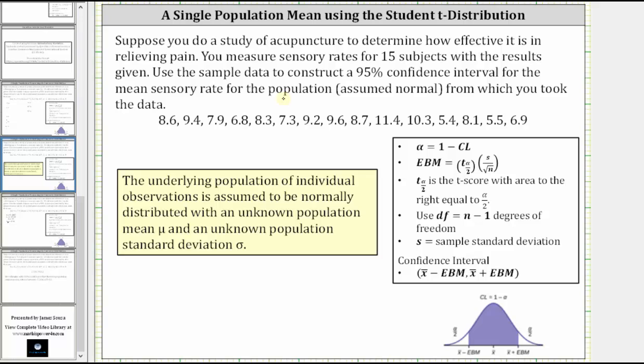The confidence interval is equal to the sample mean minus the error bound to the sample mean plus the error bound. So we'll have to find the sample mean and then looking at the formula for the error bound, we need to find the t-score as well as s, the sample standard deviation, and n, the sample size. Let's begin to work on this on the next slide.